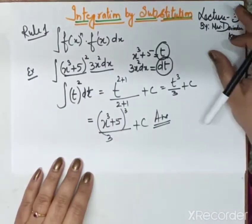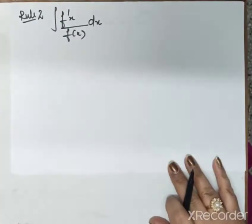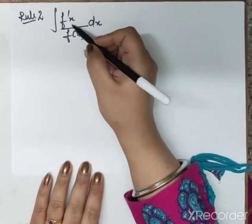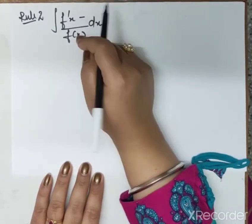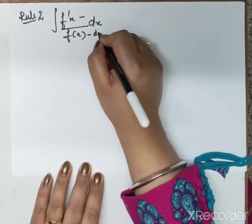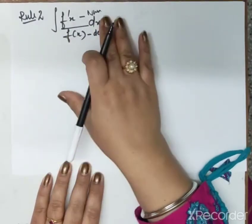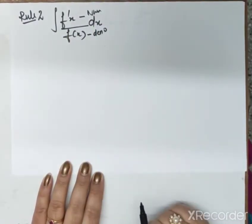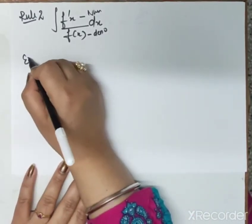If we have a function with a multiplicative derivative alongside it, then in that case we apply the method of integration by substitution. Next we have Rule 2: if our numerator contains the derivative of the main expression, and the main expression is in the denominator, then how do we solve that kind of question? Let us take an example.